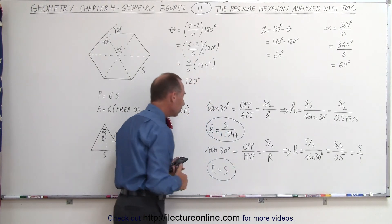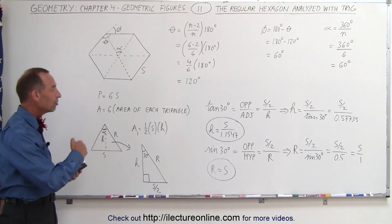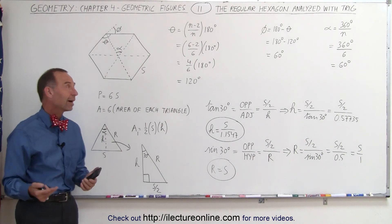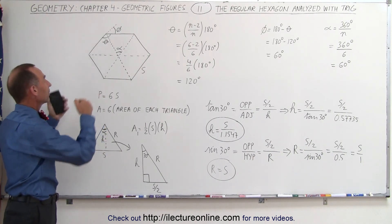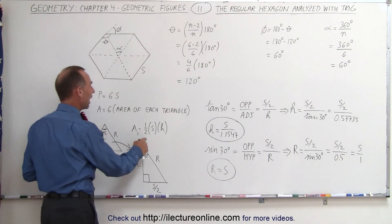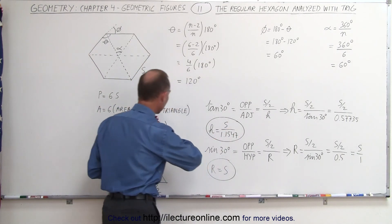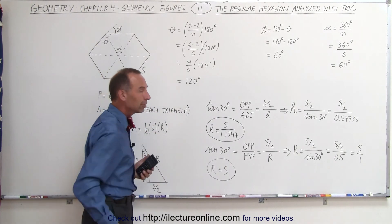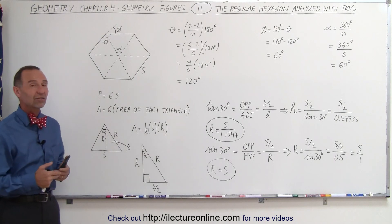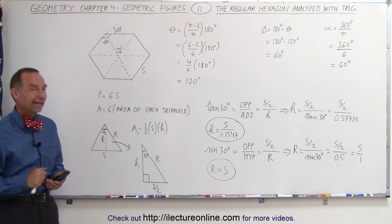We've now shown using trigonometric functions that we can establish relationships between H and S, and between R and S. Therefore, we can define the area of a regular hexagon in terms of the area of each triangle, which is 1/2 times S times H. Since H is defined in terms of S, we can eliminate H and find the area of each triangle. The area of the entire hexagon is six times the area of each individual triangle. That's how it's done.